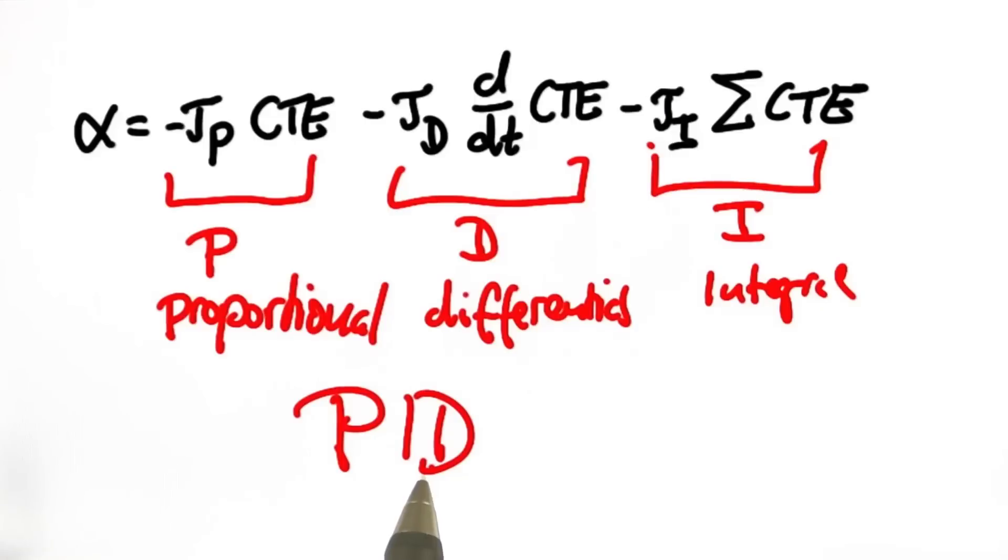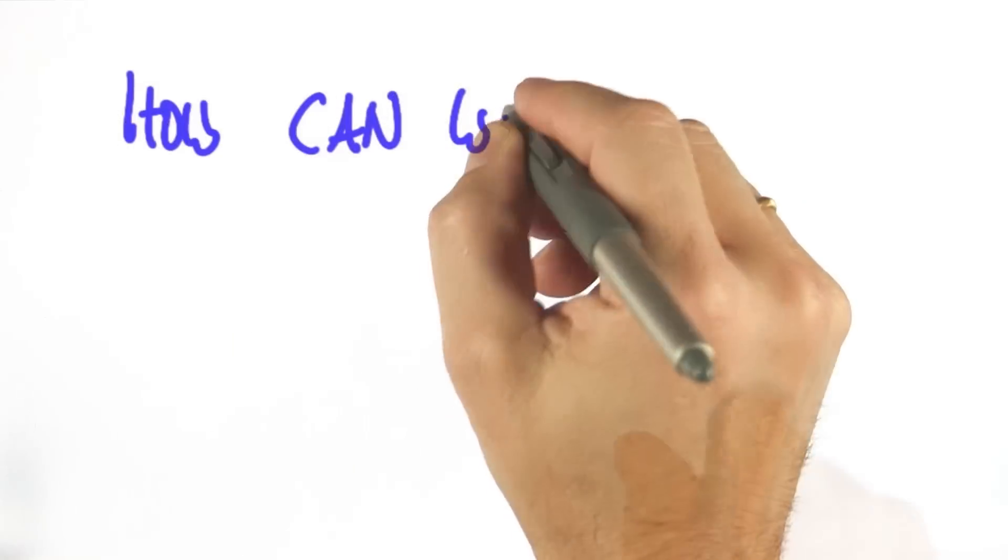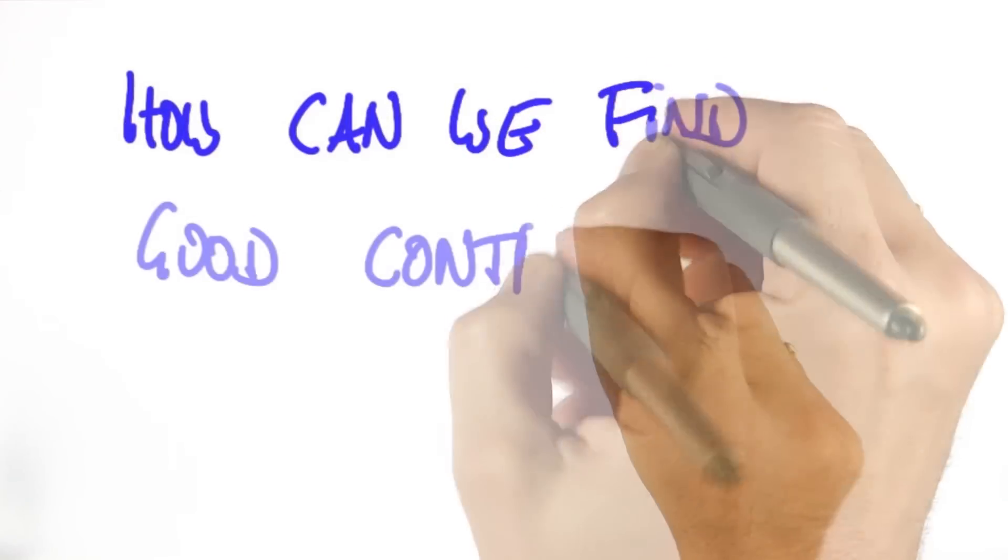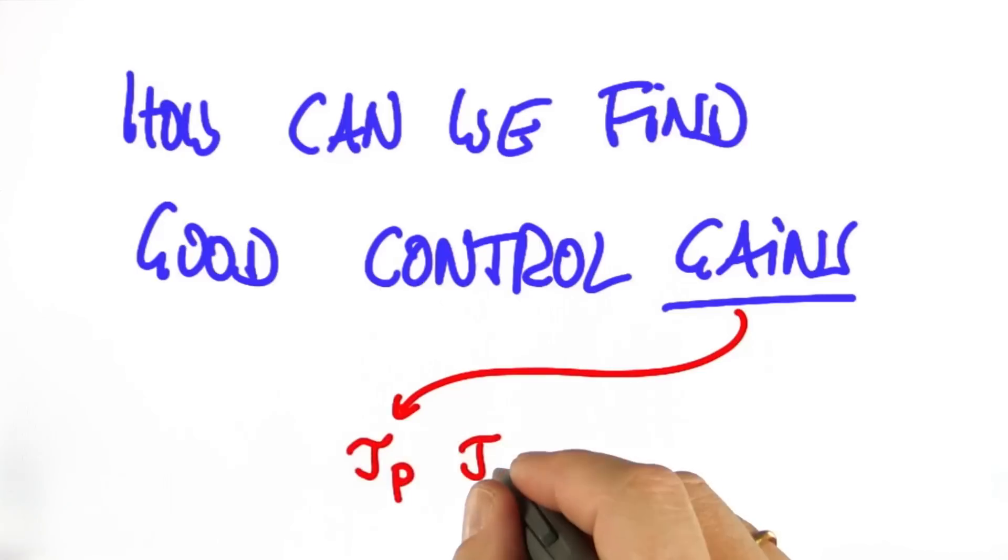So this PID controller is kind of the best solution for the control problem at hand, and you just implemented one. Now, here's the big question for you. How can we find good control gains? Where control gains are these parameters tau p, d, and i.